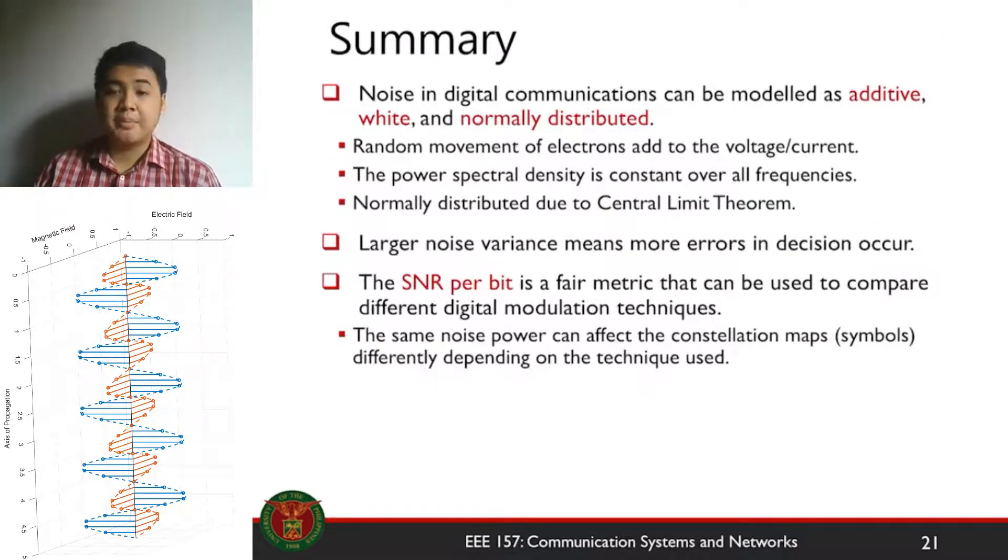So in summary, noise in digital communications can be modeled as additive, white and normally distributed. The random movement of a large number of electrons makes the Gaussian distribution approximation valid. Your power spectral density is constant all over frequencies, that's the property of being white and normally distributed due to the central limit theorem.